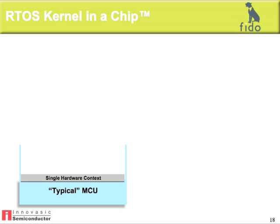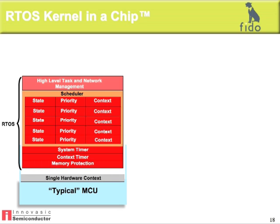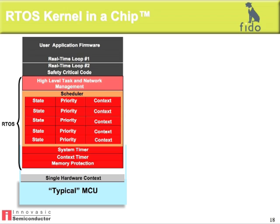In a typical microcontroller, a software RTOS kernel is loaded into a single hardware context. A high-level task and network management system would then be loaded on top of that software RTOS kernel. Finally, individual real-time tasks, safety-critical code, and user applications would then be placed on top of the high-level management system or operating system.